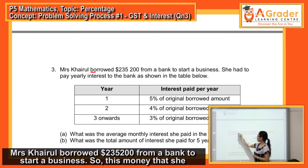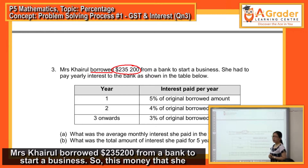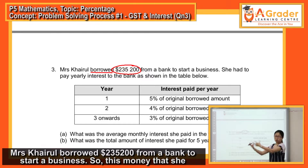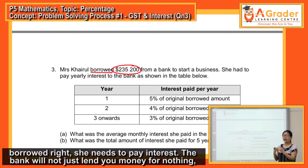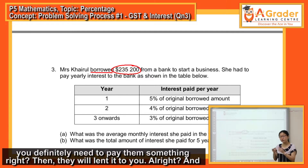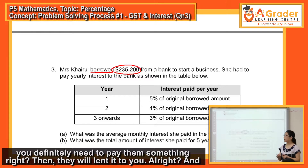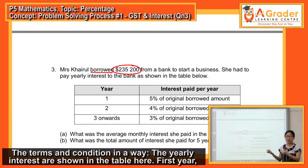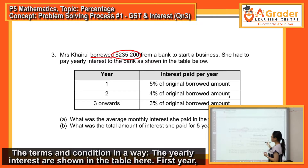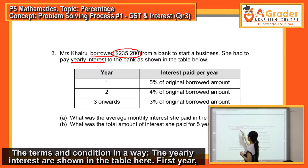Mrs. Kairu borrowed $235,200 from a bank to start a business. This money that she borrowed, she needs to pay interest. The bank will not just lend you money for nothing — you definitely need to pay them something, then they will lend it to you. The terms and conditions, the yearly interest, are shown in the table here.